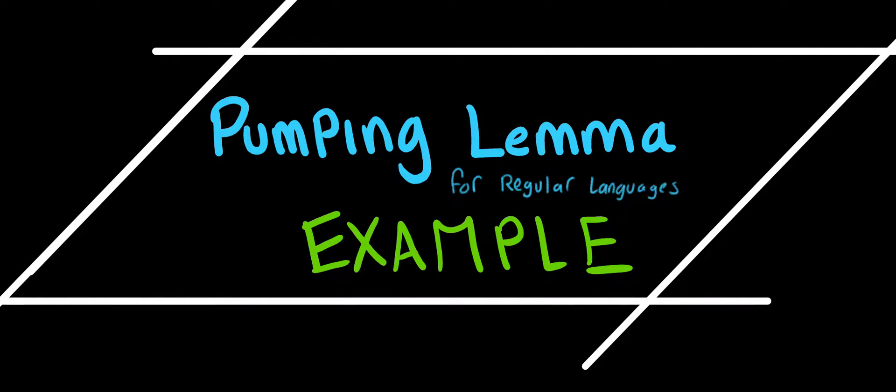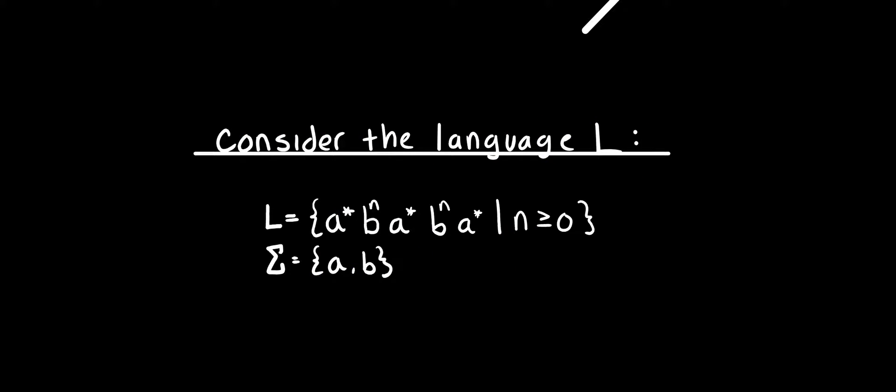Hello, this will be an example of the pumping lemma for regular languages. Consider the language L having the input alphabet A and B, being the string A star B^n A star B^n A star such that N is greater than or equal to 0.